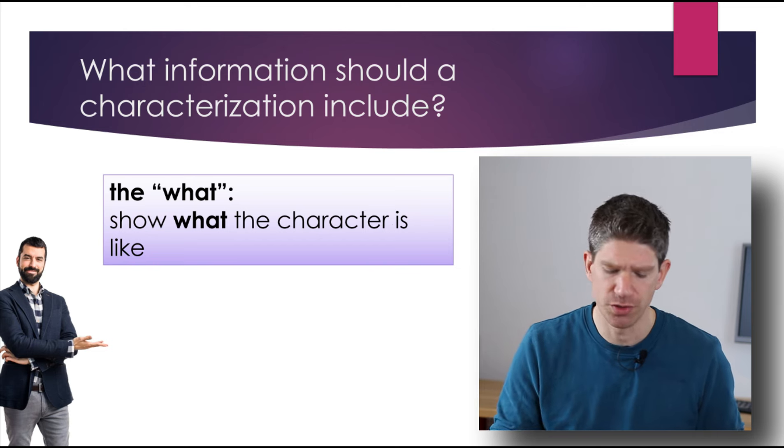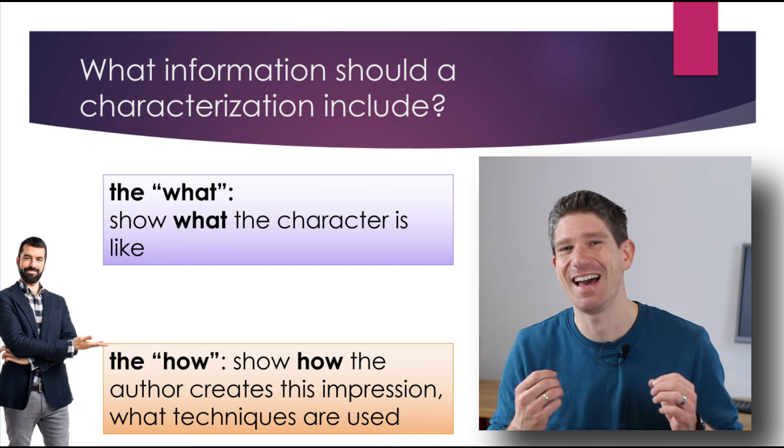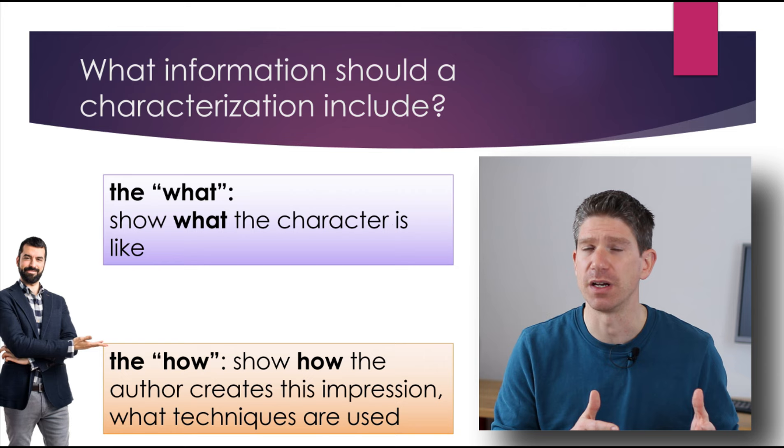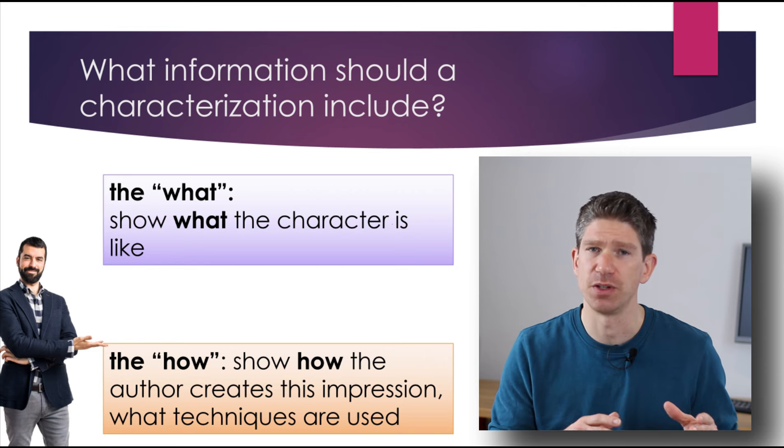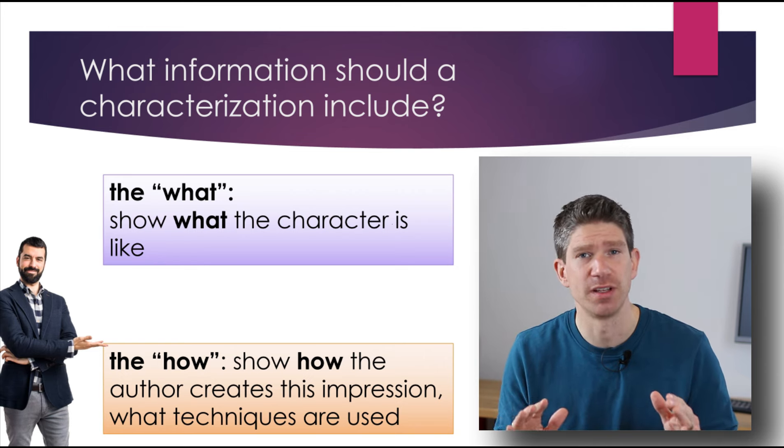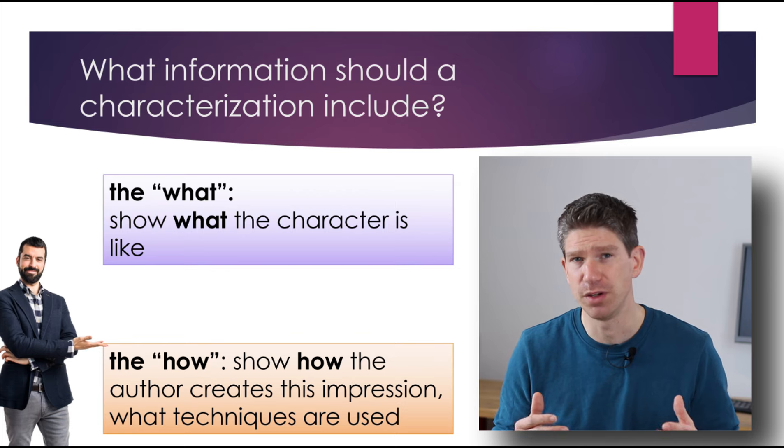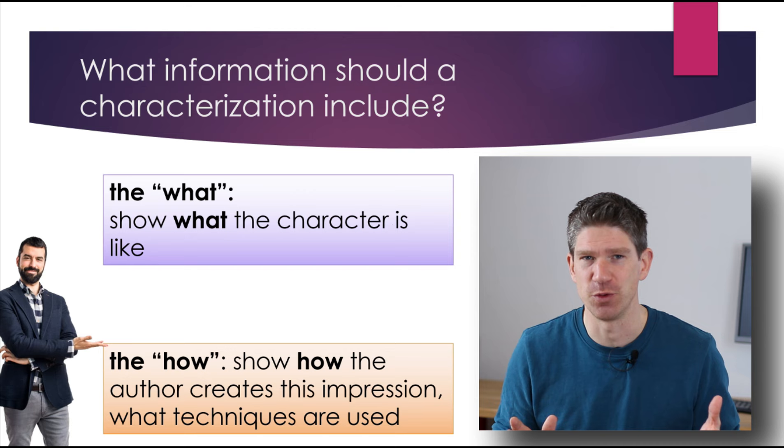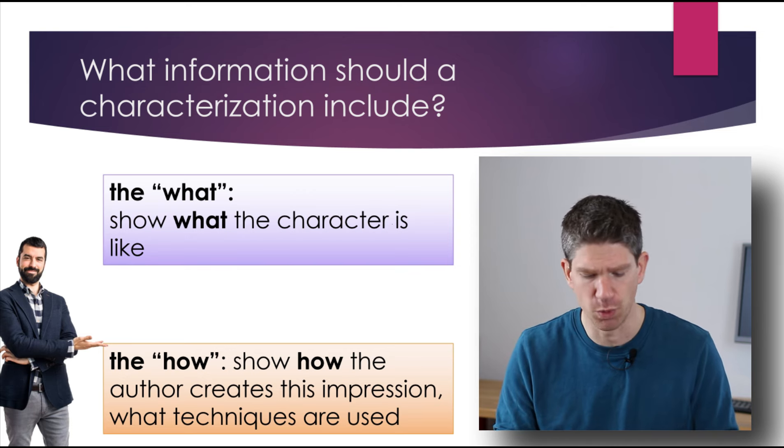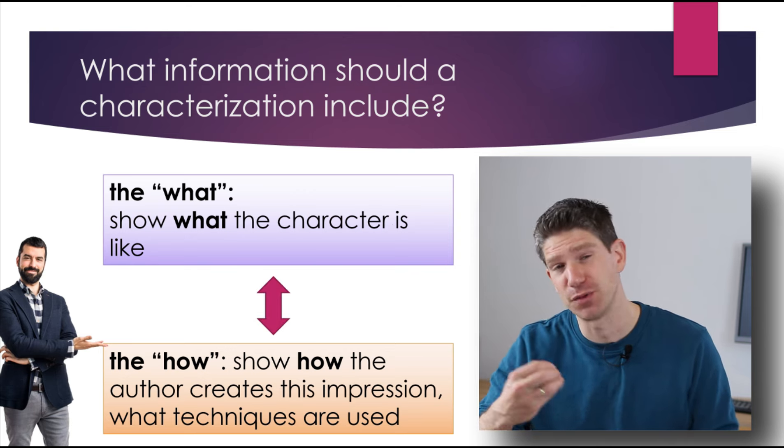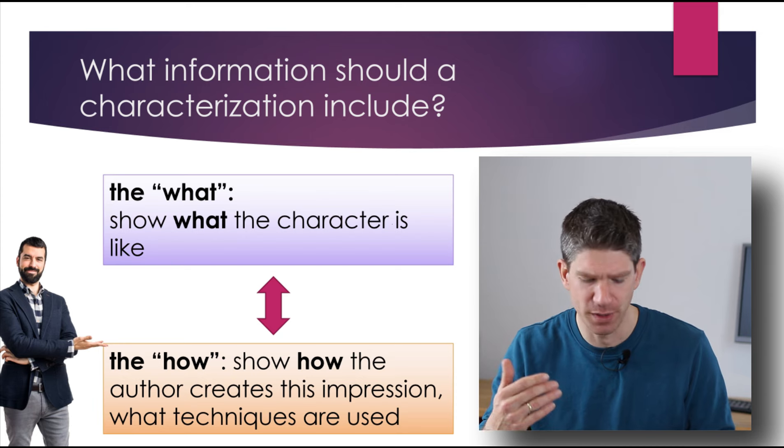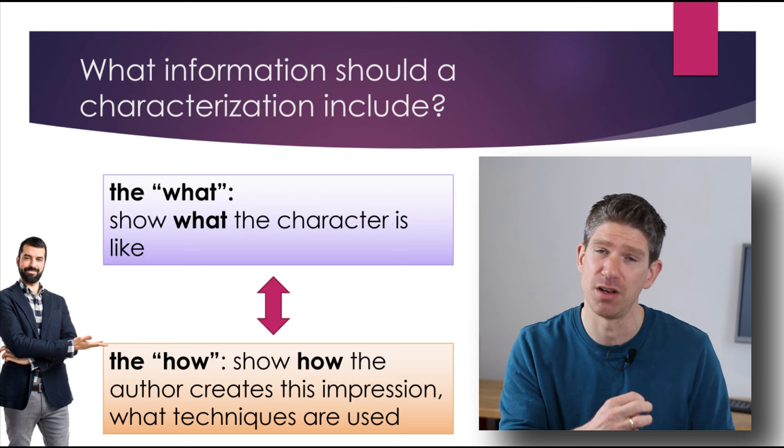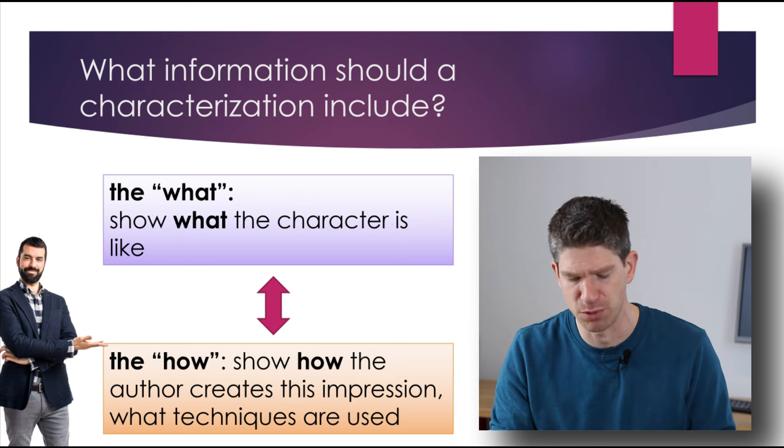But your characterization should also include what I like to call the how. How does the author create this impression? Here, of course, I was going by a photo. So I got this information from the photo, but the author only has words. How does the author use words to create this impression? And depending on what task exactly you have, you're focusing more on one or more on the other. And they often, of course, have to do with each other. So you find out what the character is like by looking at or by using the things the author has used to create this impression.